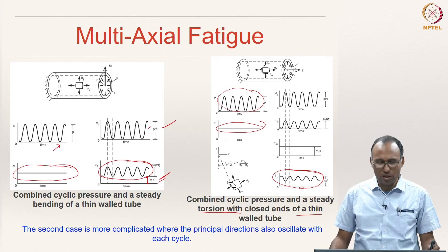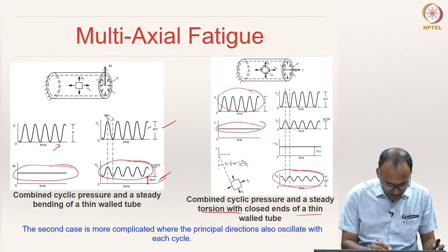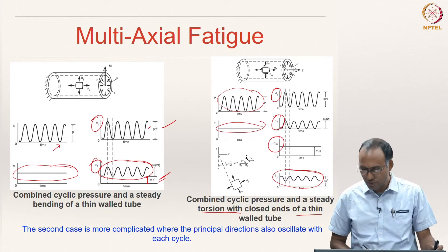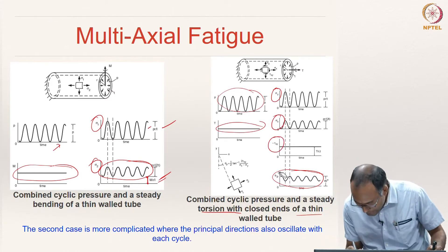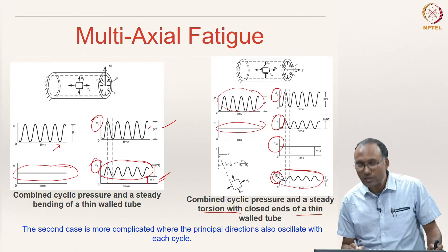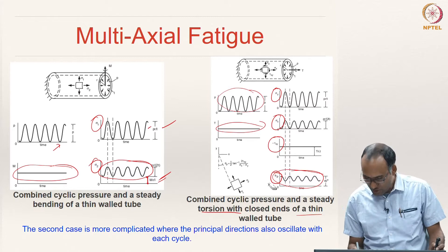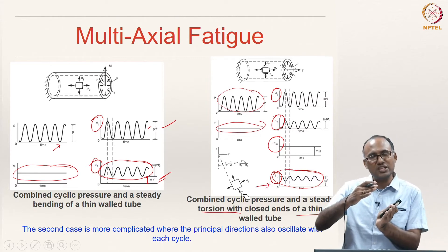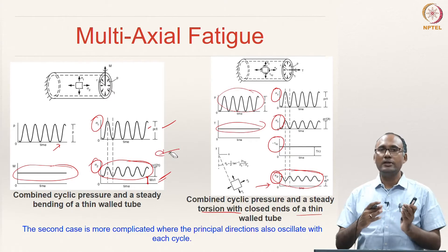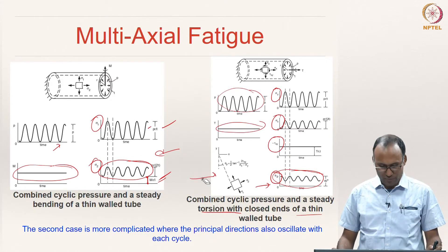These are two complex loading scenarios which give you a multiaxial loading system. Here you can see sigma 1 and sigma 2, and sigma y, sigma x, tau xy. If you carefully look, this is where we have drawn theta p — the direction of the principal stresses — and you can clearly see that the principal stress direction is also oscillating in this scenario. That means the direction of the principal components of stress is actually changing as you are loading the system. Whereas in this other case, fortunately the direction of principal stress is not changing — it remains the same.